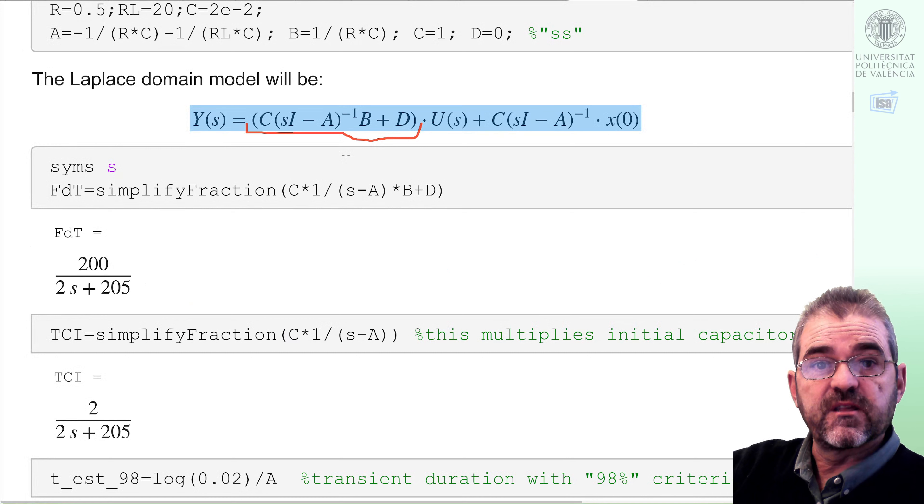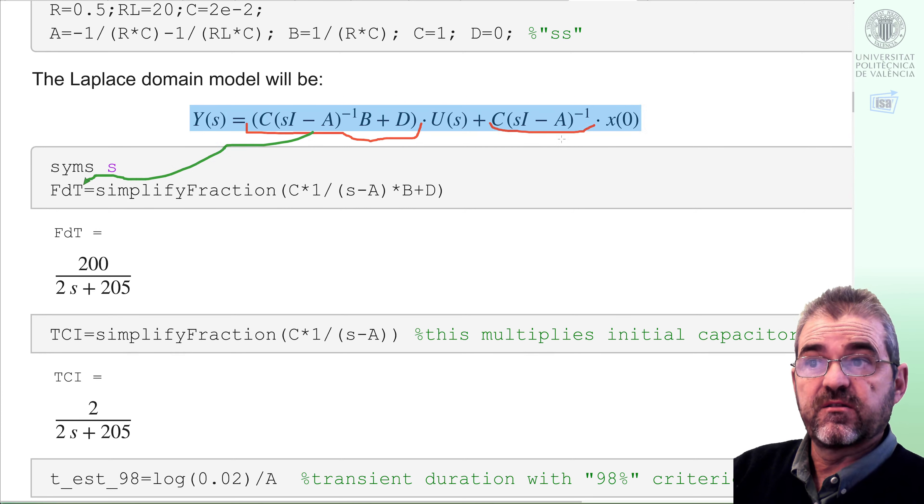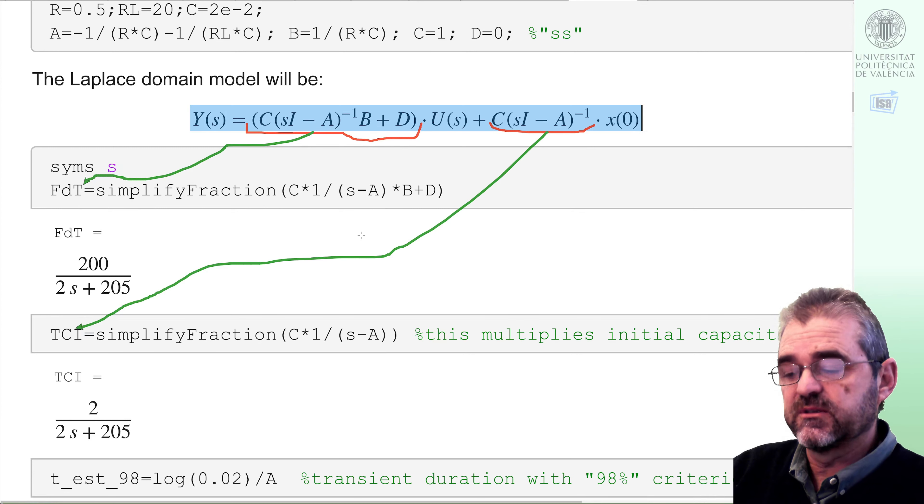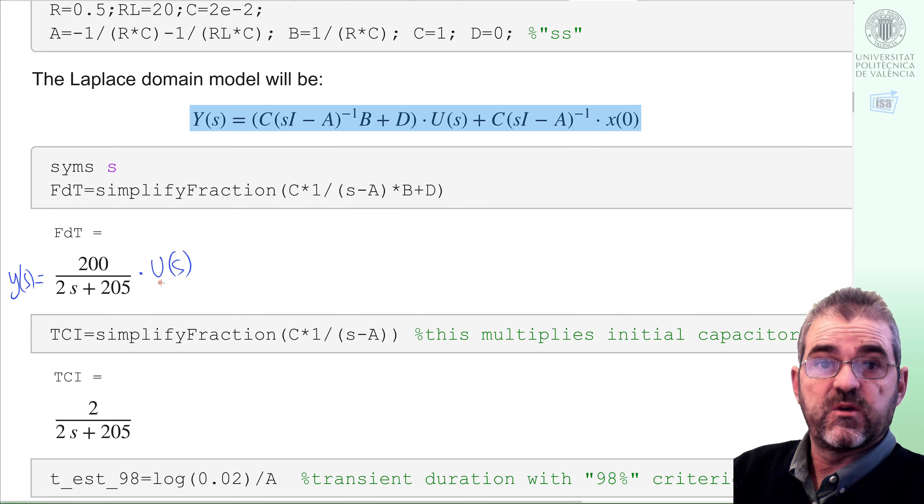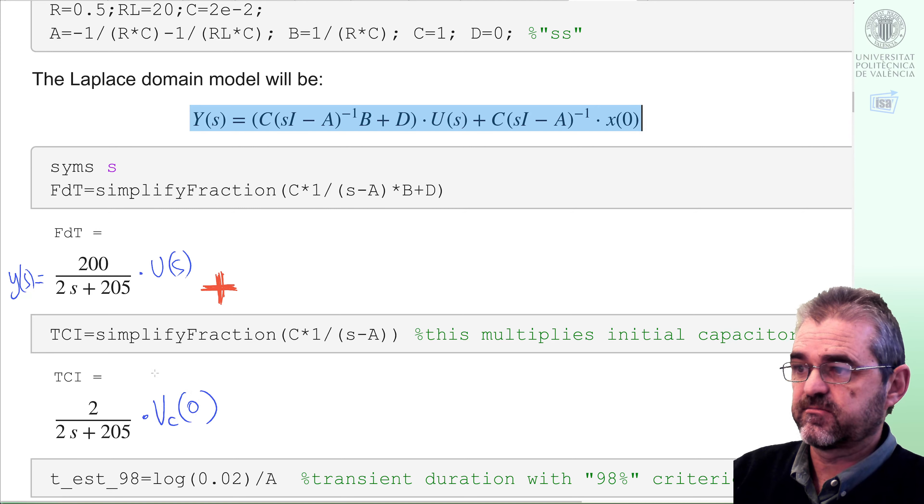Okay, then, this thing that multiplies the input is the transfer function, which I named fdt. And this thing that multiplies the initial condition, I denote it as tci. Well, this is what MATLAB outputs, so we end up with a module in which we have that the output is the transfer function times the input in Laplace domain, plus this stuff times the initial capacitor charge, if we were to solve this with non-zero initial conditions. So, this is the overall module in the Laplace transform domain.